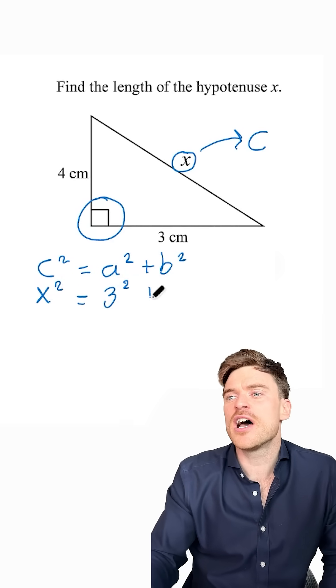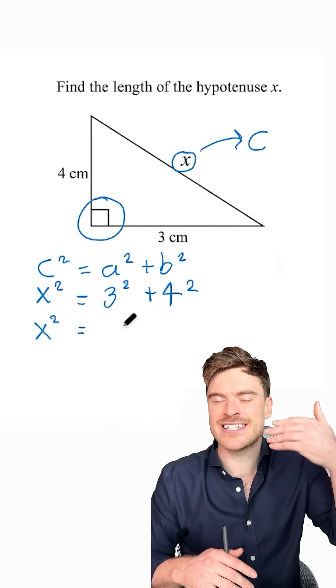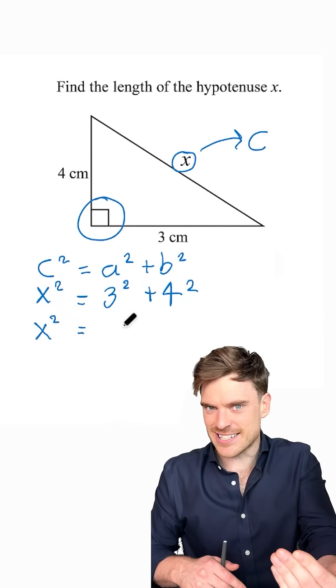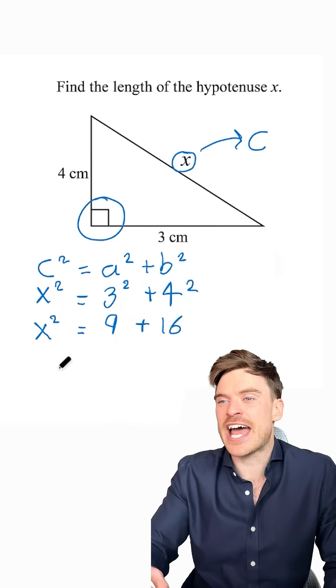X squared is equal to 3 squared plus 4 squared. Grand! Now, please don't tell me this. 3 squared is not 6. 3 squared is 9. So 9 plus 16 is equal to X squared.